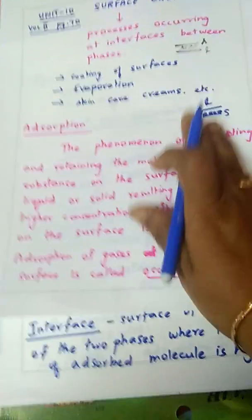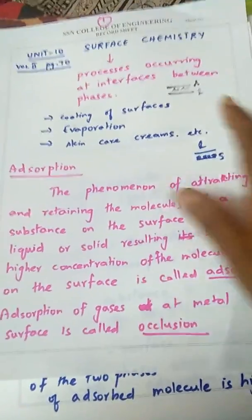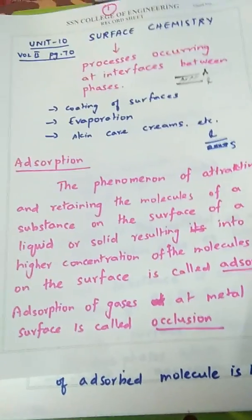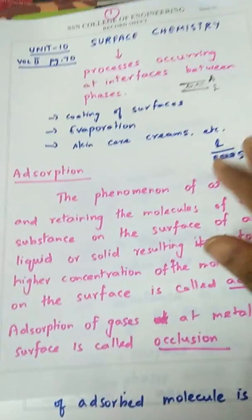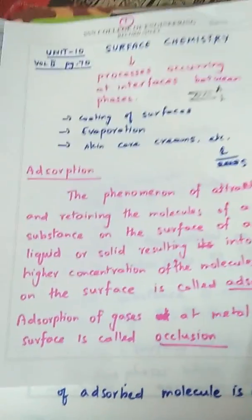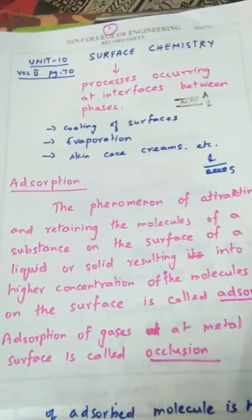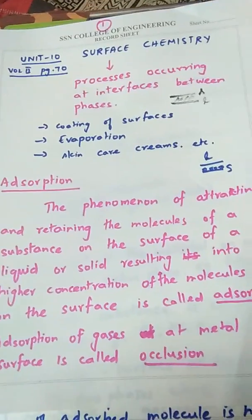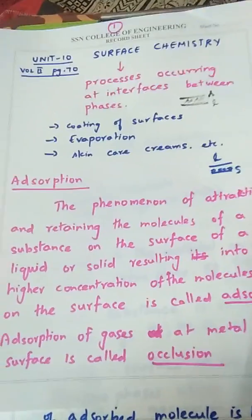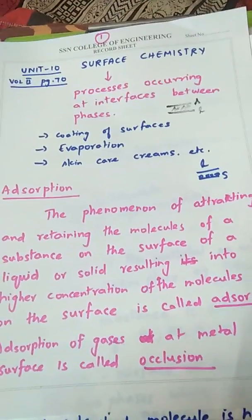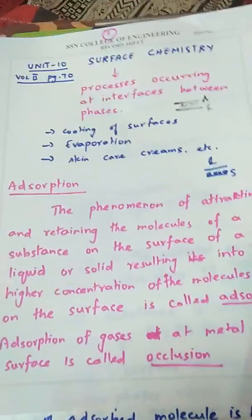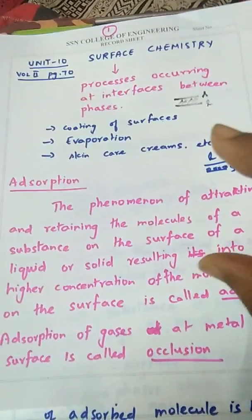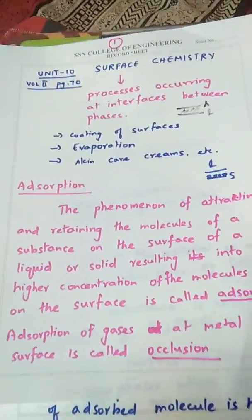Adsorption of gases at a metal surface is called occlusion. To repeat: adsorption is a surface phenomenon — the phenomenon of attracting and retaining molecules on the surface of a liquid or a solid, resulting in high concentration of molecules at the surface.